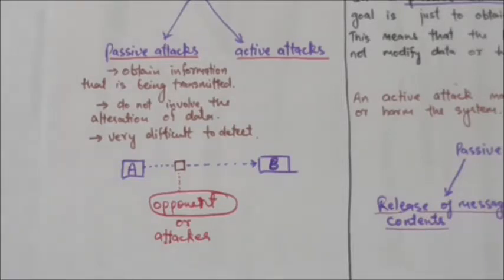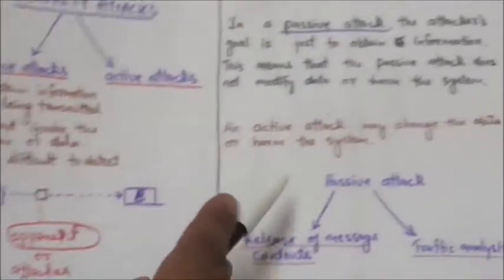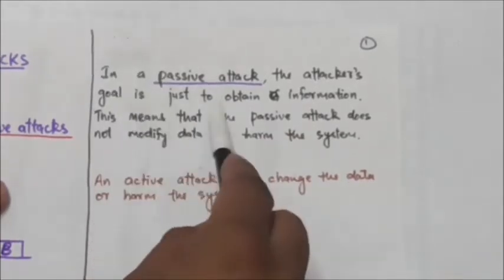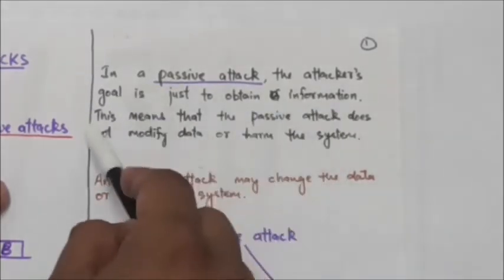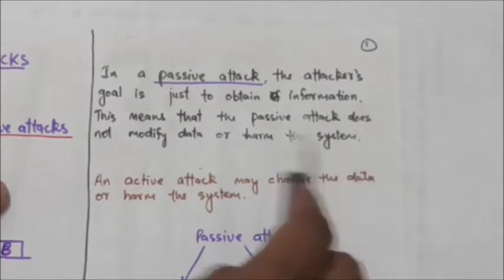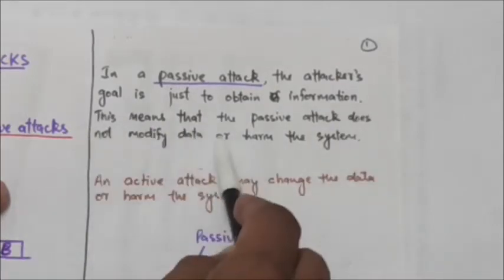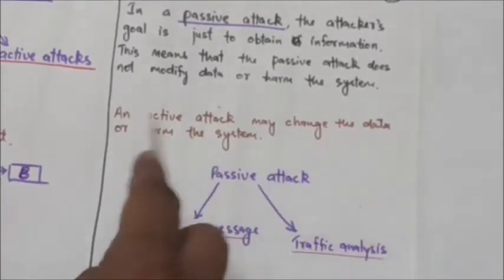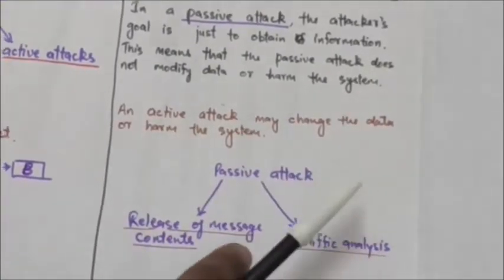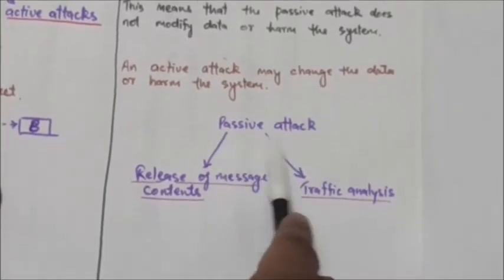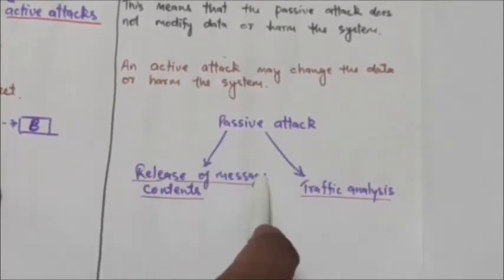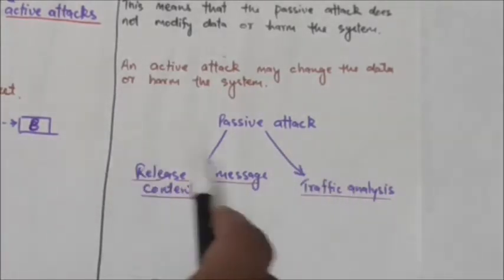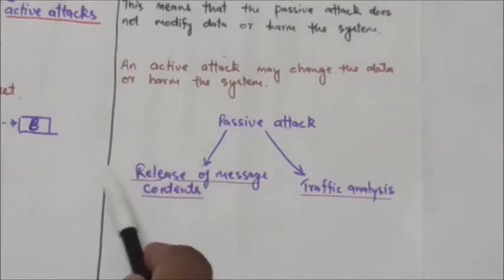In passive attacks, the attacker's goal is just to obtain information — the passive attack does not modify data or harm the system, whereas an active attack may change the data or harm the system. There are two types of passive attacks: release of message contents and traffic analysis.